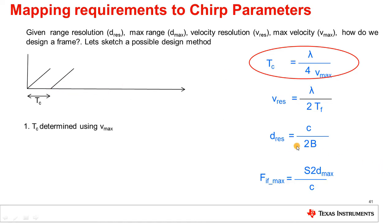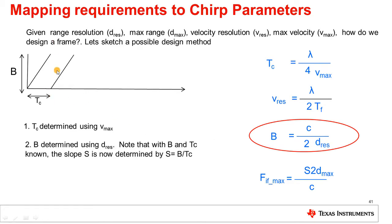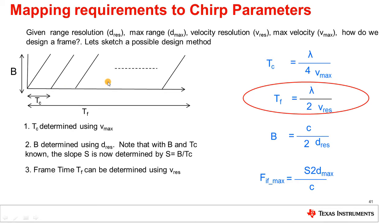Next, note that the range resolution depends only on the chirp bandwidth. So, this gives us the bandwidth B. And we now go and modify the chirps in our frame to reflect this bandwidth. Note that since we've already decided the chirp duration and the bandwidth, this means that we've already locked in the slope S of the chirp. Next, the frame duration only depends on the velocity resolution. So, this allows us to compute the required frame time TF. We'll go in and fill in the required number of chirps spaced TC apart to fill in the time duration of TF. So, basically, that completes our definition of the entire frame.